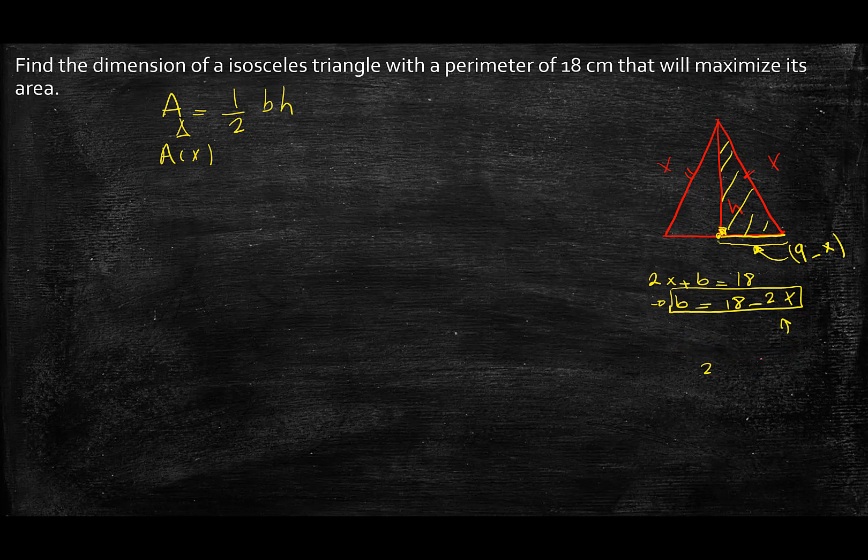All right. So now I have this in terms of x. All I need to do is to write h in terms of x, which is easy. So x squared, which is the hypotenuse squared, equals h squared plus 9 minus x squared. Now in order to rewrite h in terms of x, which is my goal, I can write h squared equals x squared minus 9 minus x squared.